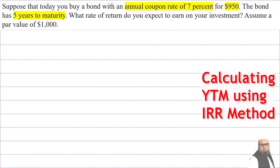Let's suppose that today you buy a bond with an annual coupon rate of 7% for $950. The bond has 5 years to mature. What rate of return do you expect to earn on your investment? Assume a par value of $1,000. We will use this example to find the yield to maturity manually, using Microsoft Excel, and using the financial calculator BA2 Plus Professional.